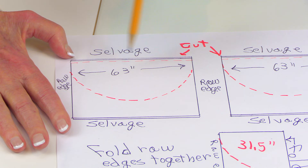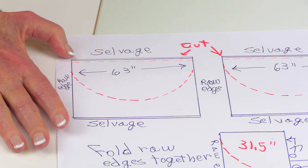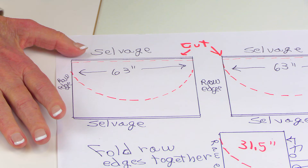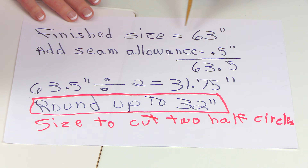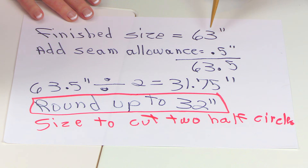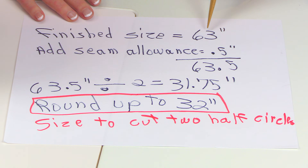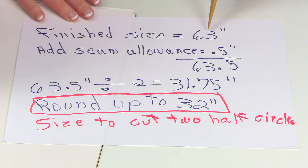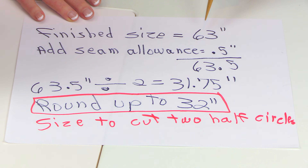You're going to cut that number in half. Make sure you're using your finished size. In my calculation, I have 63 inches as the finished size.